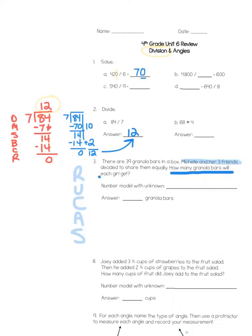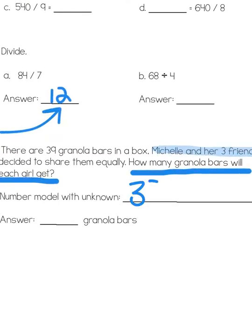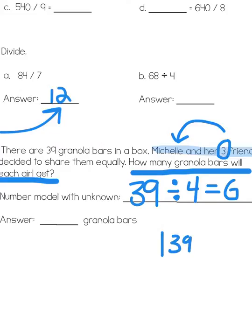So, if I underline that problem, I know I'm going to be dividing 39 by the number of girls. Now, here's the tricky part. We see the number 3 right up here, so the go-to number would be, oh, there's the number 3. I'm going to divide 39 by 3. But the thing is, it's Michelle and her 3 friends. So we're going to divide this into 4 groups. So, my number model with the unknown is 39 divided by 4 equals G. G for granola bar. So, I need to set up that problem and solve 39 divided by 4.